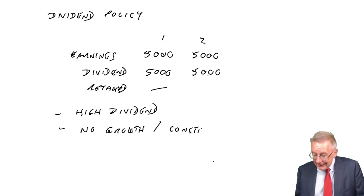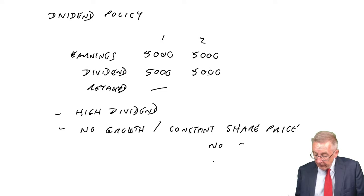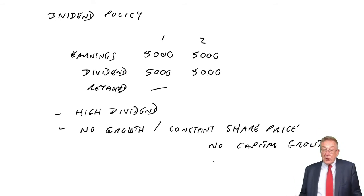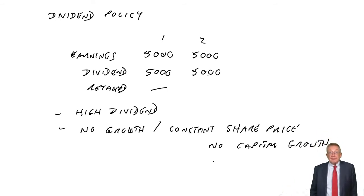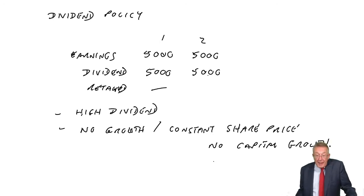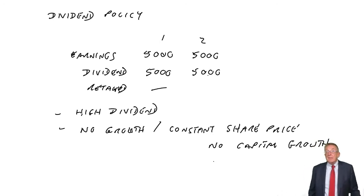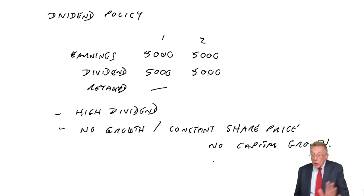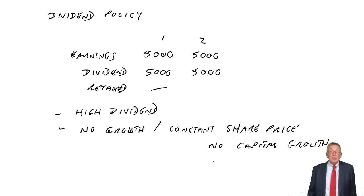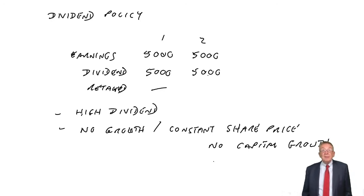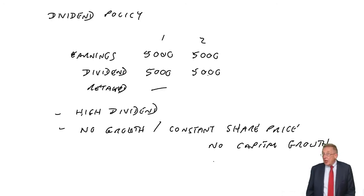And if the company's not growing, there's no reason why the share price should grow either. A constant share price — there'll be no capital growth. Shareholders may be happy getting a nice big dividend, but there's no reason why that dividend should grow in the future, and therefore no reason why the share price should grow.